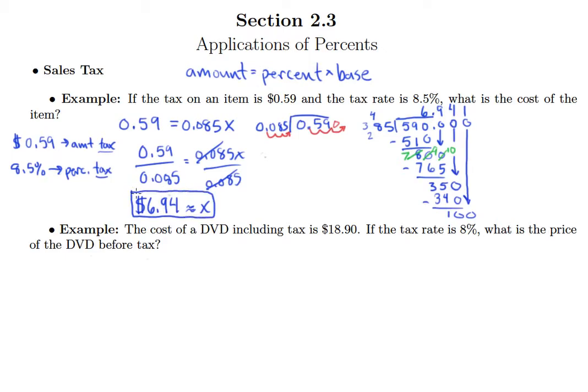Now let's take a look at the second example. It says the cost of a DVD including tax is eighteen dollars ninety cents. If the tax rate is eight percent, what is the price of the DVD before tax? Again, hopefully very quickly you should understand we're looking for the base. Because it says what is the price before tax, the base is always the price prior to tax being applied.